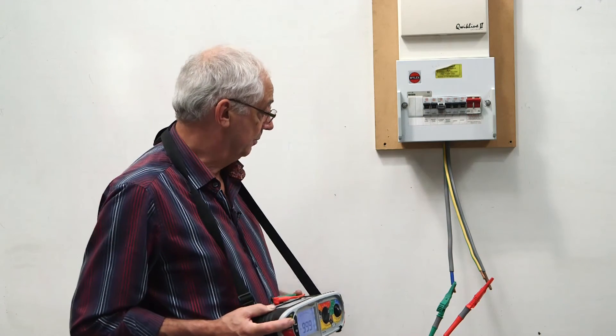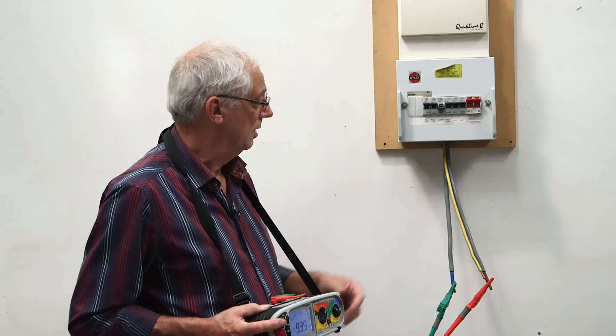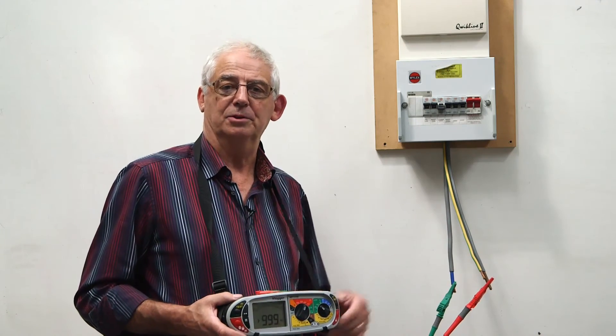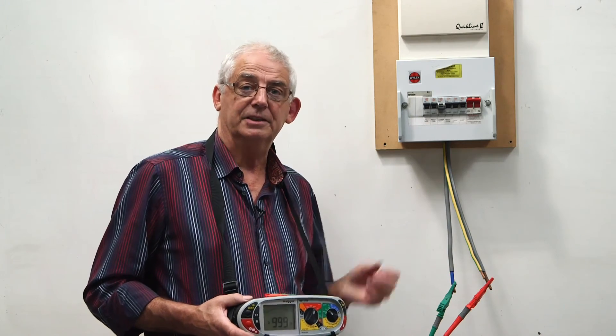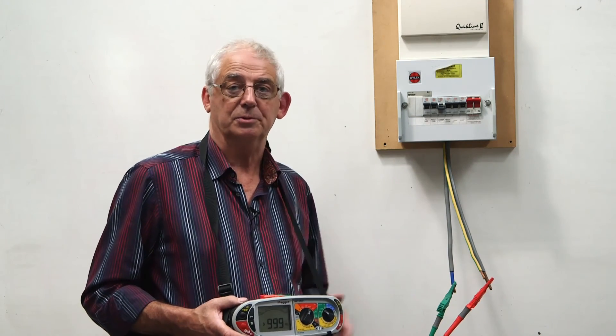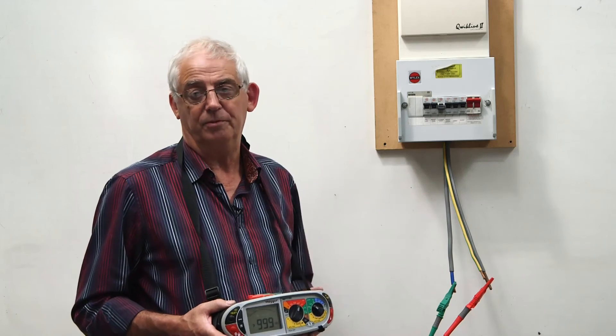At that point, because it's between line and neutral, I may want to look up in the airing cupboard just to make sure that the immersion heater is not switched on or possibly there's a neon indicated lamp on the switch. So that would be the first place I would look.